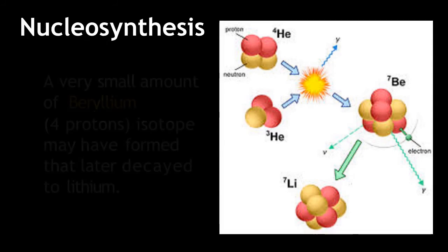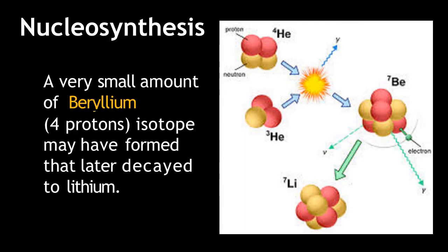A very small amount of beryllium isotope, which has four protons, may have formed that later decayed to lithium.